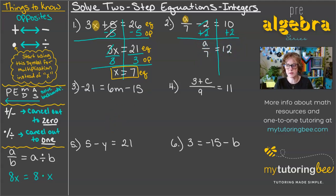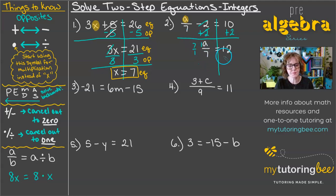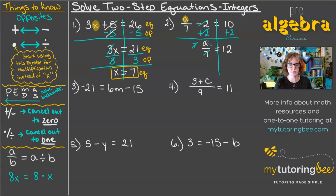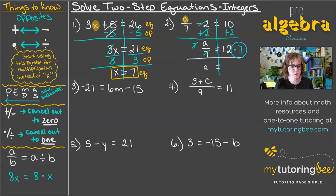Now in order to undo this division, we want to multiply. You can think of it as multiplying by the reciprocal — this is technically 1a over 7, so we're multiplying by 7 over 1 times 1 over 7. That cancels out that coefficient of 1 over 7. We chose to multiply by 7 so that it cancels with the denominator of 7 and leaves us with just a. Of course we have to multiply the other side by 7 also, so a equals 12 times 7, which is 84. That's our solution for problem 2.